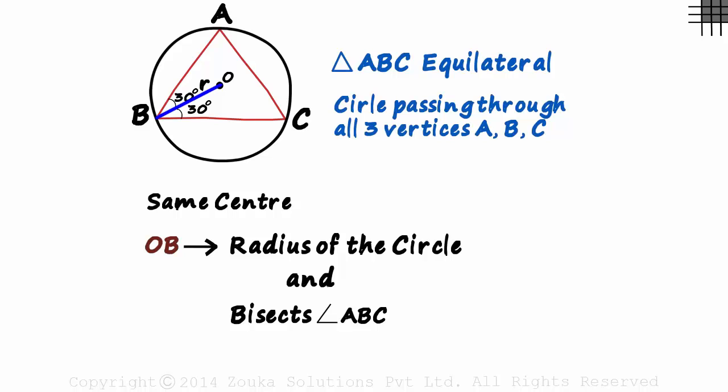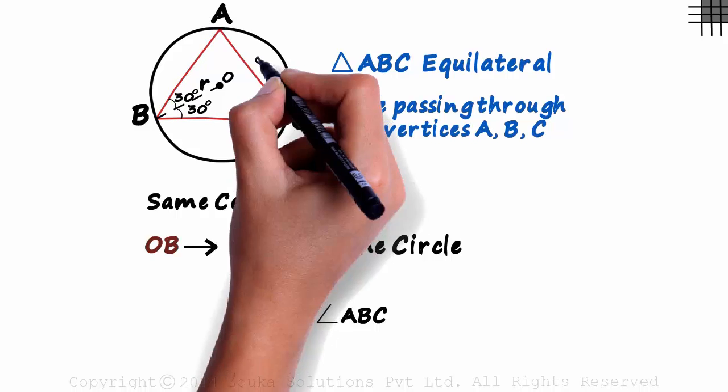So OB is the radius and also bisects angle ABC. Let each side of the triangle be s units long.